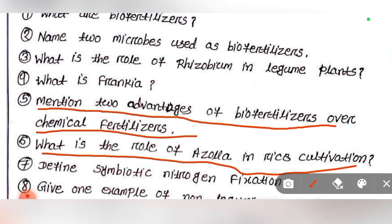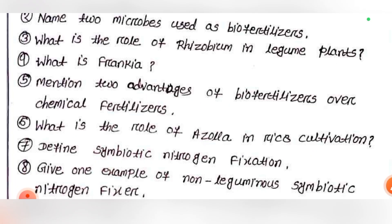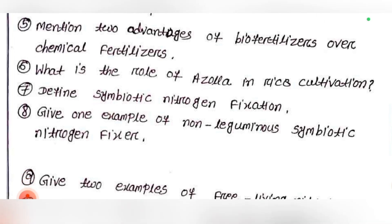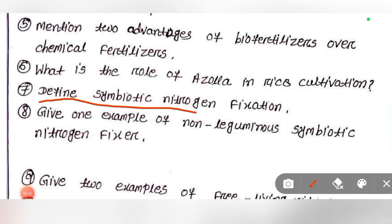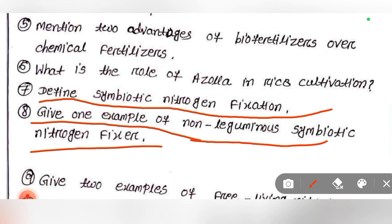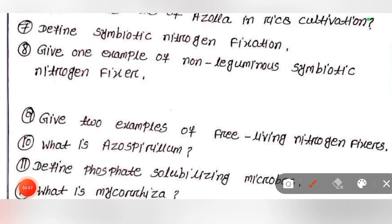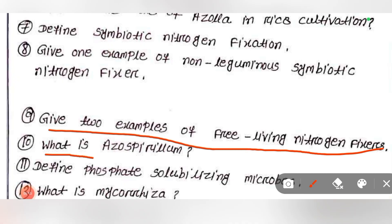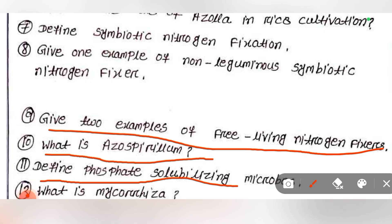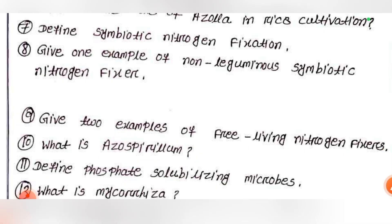Explain the role of Azolla in rice cultivation. Define symbiotic nitrogen fixation. Give one example of a non-leguminous symbiotic nitrogen fixer. Give two examples of free-living nitrogen fixers. Then, what is Azospirillum? Define phosphate solubilizing microbes.